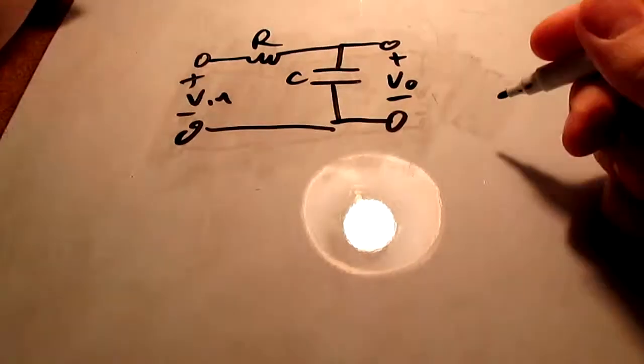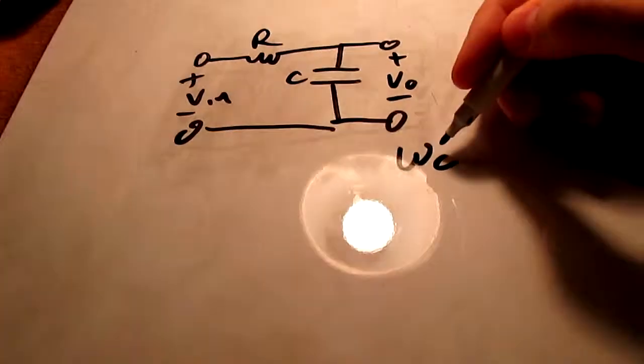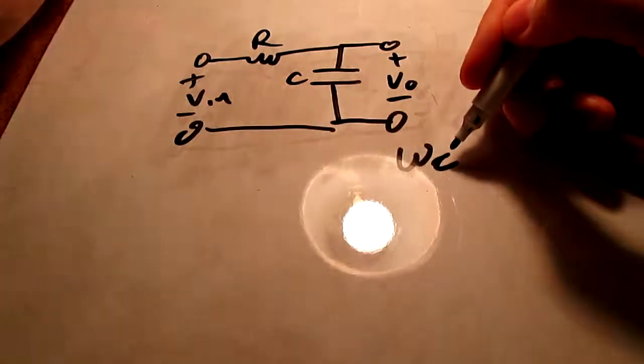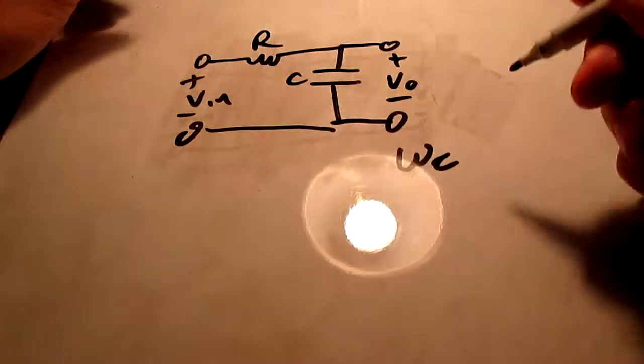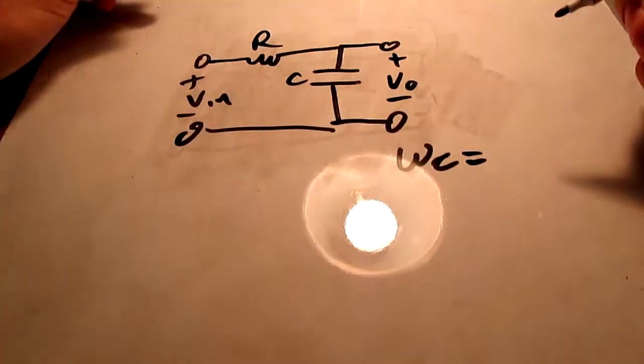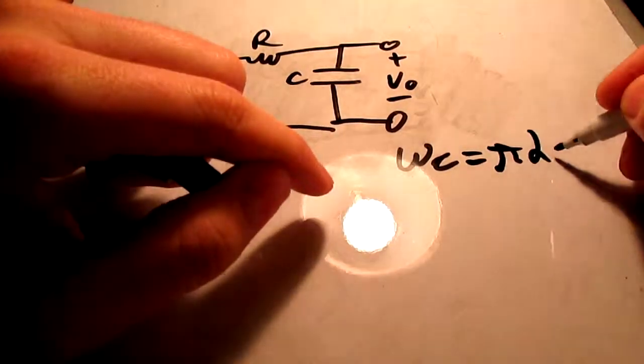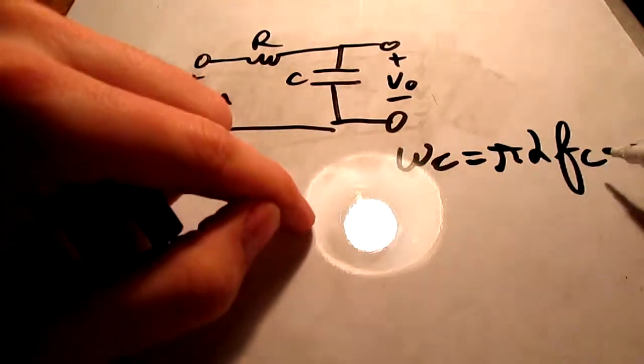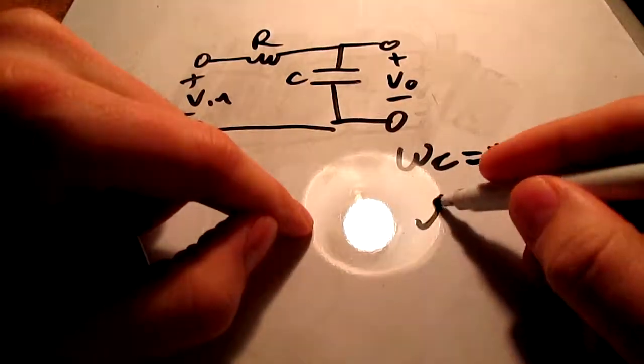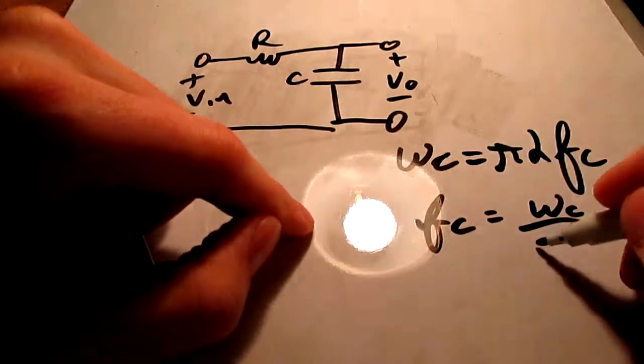your omega c, which is your angular frequency at the 3dB, this is your 3dB angular frequency, also known as your cutoff frequency, your angular cutoff frequency. And that's related to the frequency of our cutoff frequency by 2 pi times f c. So, f c is our cutoff frequency. This is our angular cutoff frequency. As you can see here, f c is equal to omega c divided by 2 pi.